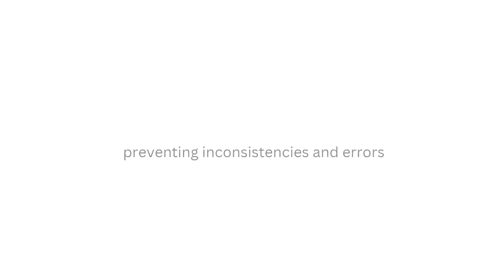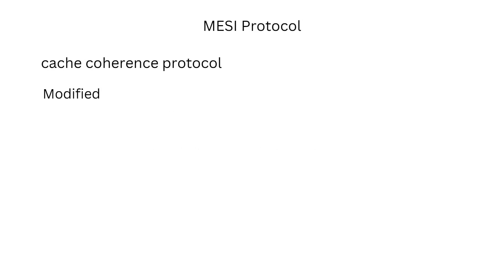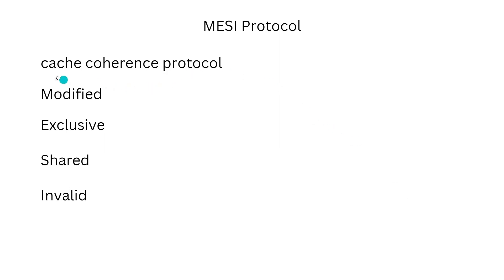Let's see about the MESI protocol. The MESI protocol is a cache coherency protocol used in the Pentium processor to ensure that all caches in a multiprocessor system have consistent data. MESI stands for Modified, Exclusive, Shared, and Invalid — the four states that each cache line can be in.